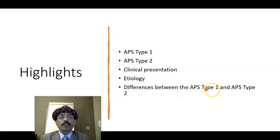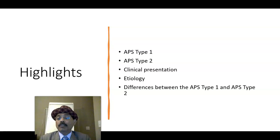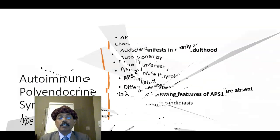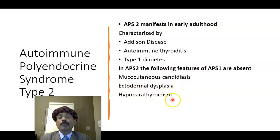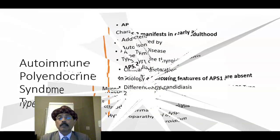To summarize the differences between APS type 1 and APS type 2: in APS type 2, there is no mucocutaneous candidiasis, no ectodermal dysplasia, and no hypoparathyroidism. These are the features of APS type 1.